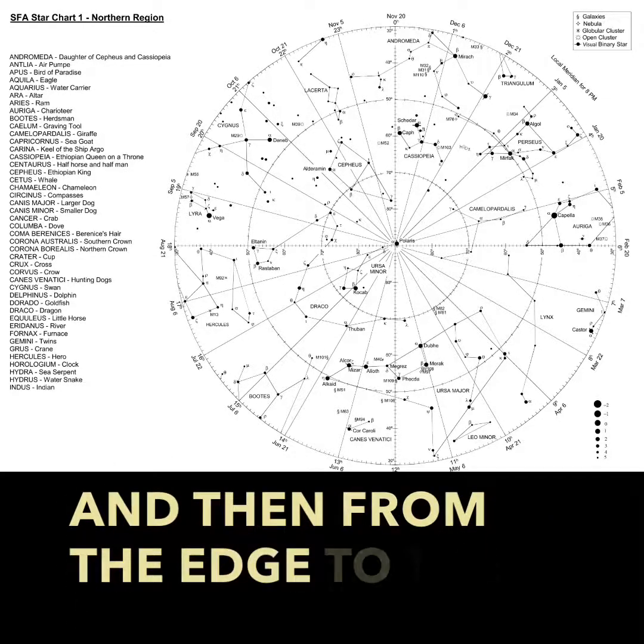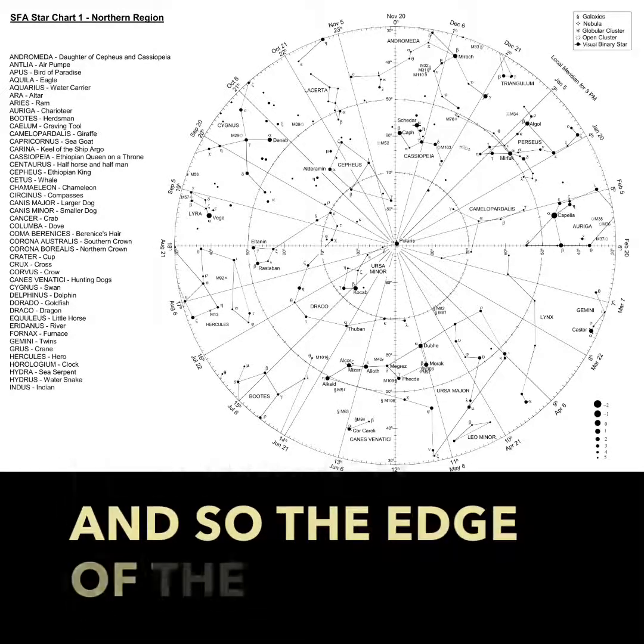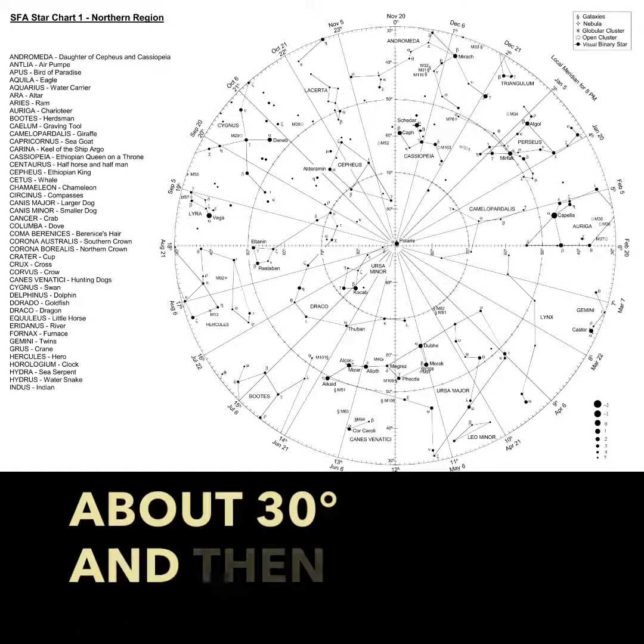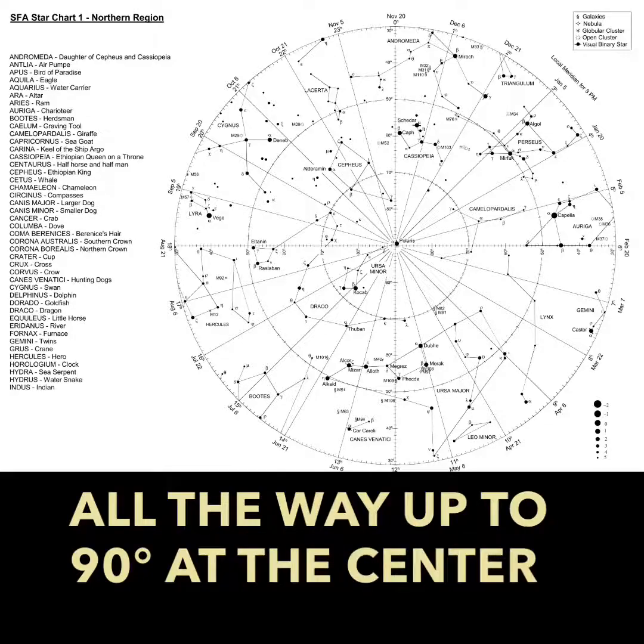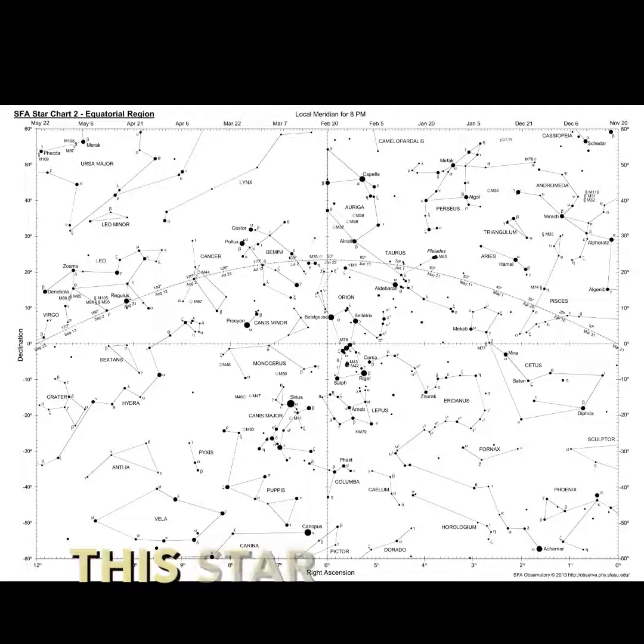And then from the edge to the center is declination. And so the edge of the diagram is about 30 degrees and then you'll see 40 degrees, 50 degrees and all the way up to 90 degrees at the center where you will notice Polaris.